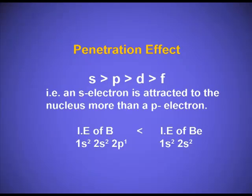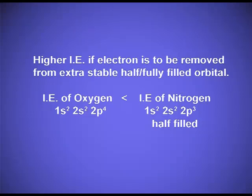For example, the ionization energy of boron is less than the ionization energy of beryllium. In beryllium, we are pulling out the electron present in the 2s orbital, whereas in boron the electron to be removed is in the 2p orbital. Although the principal quantum number is the same in both cases, the penetration effect of the s orbital is higher. Similarly, if we disturb a stable electronic configuration — either half-filled or fully filled — it will need much higher energy.